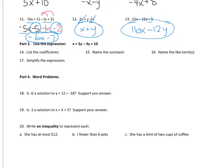Then use the expression and list the coefficients. Coefficients are numbers that are in front of variables. So 1 is one of them because it's 1x, then 2 is another one, and then negative 3. The number 10 is not a coefficient — it does not have a variable, so that's called the constant. The like terms have the same variables, so the like terms are 2y and negative 3y.